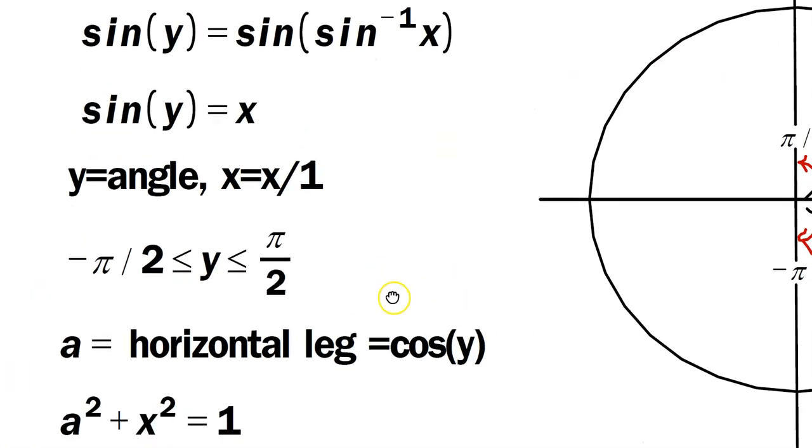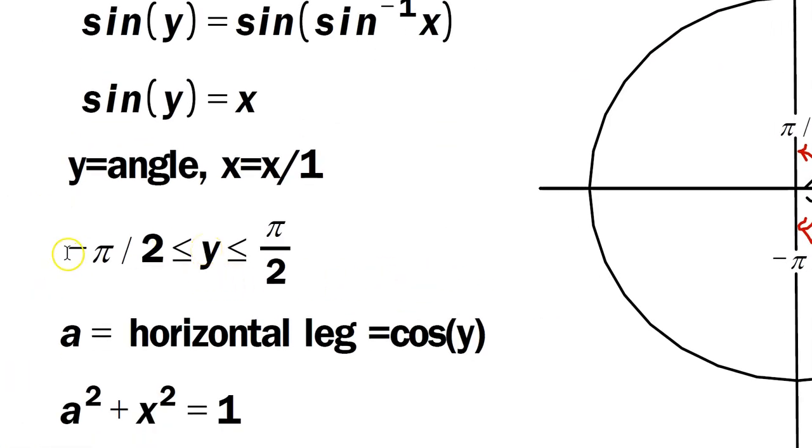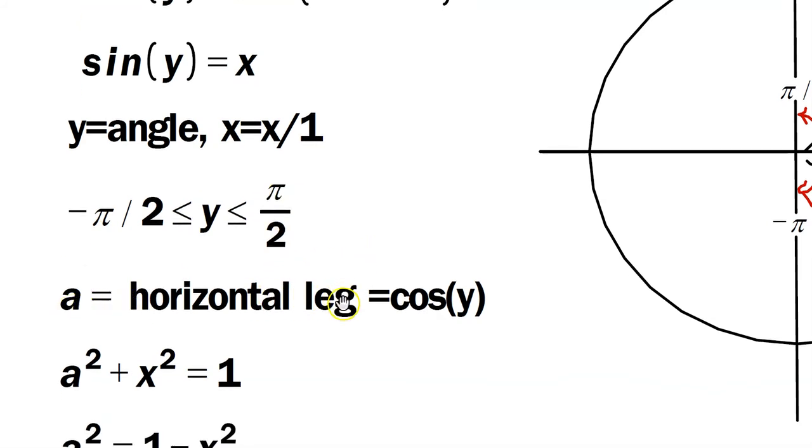So now getting back to here, we can say the following. That y is always between negative pi over 2 and positive pi over 2. And we're going to call a the horizontal leg of the triangle. In other words, it's also called cosine y.